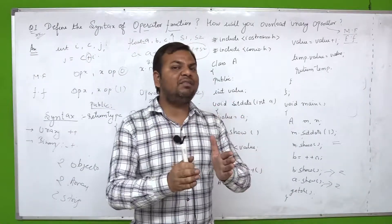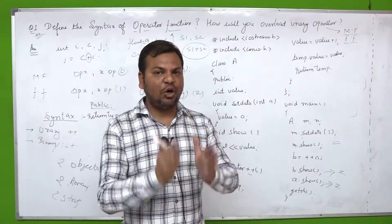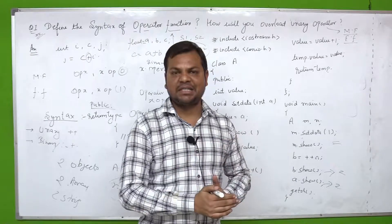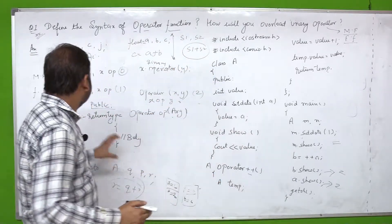Because what is the work of operator function? To sum two objects. Or where objects come, there your function should be in public so that object can access it. Okay?